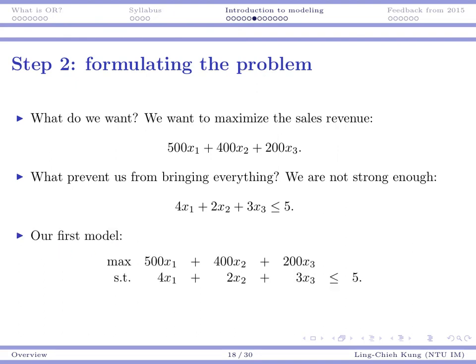Our first model for this problem is: maximize 500x_1 + 400x_2 + 200x_3 subject to the constraint that 4x_1 + 2x_2 + 3x_3 ≤ 5. This is a proposed model for our problem. No one says it's the best model or the correct model, but later we will try to solve the problem and see whether the model is good or not.